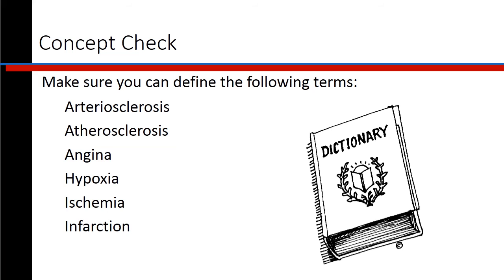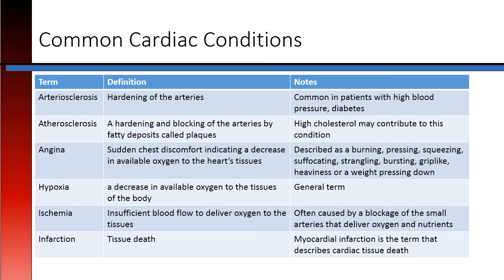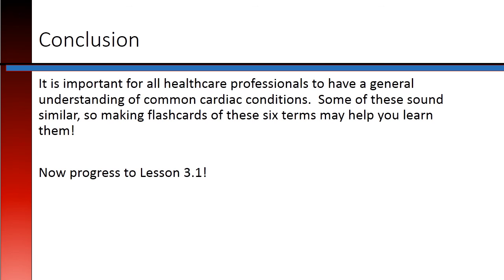Make sure you can define the following terms: arteriosclerosis, atherosclerosis, angina, hypoxia, ischemia, and infarction. Use this handy chart for a quick review of each of the terms. It is important for all healthcare professionals to have a general understanding of common cardiac conditions. Some of these sound similar, so making flashcards of these six terms may help you learn them. Now progress to Lesson 3.1.